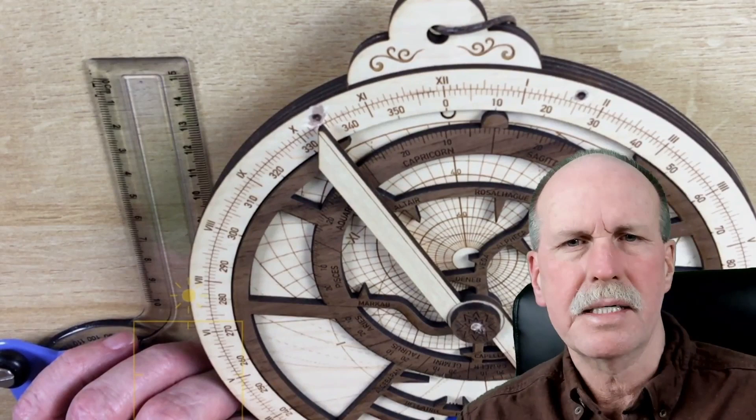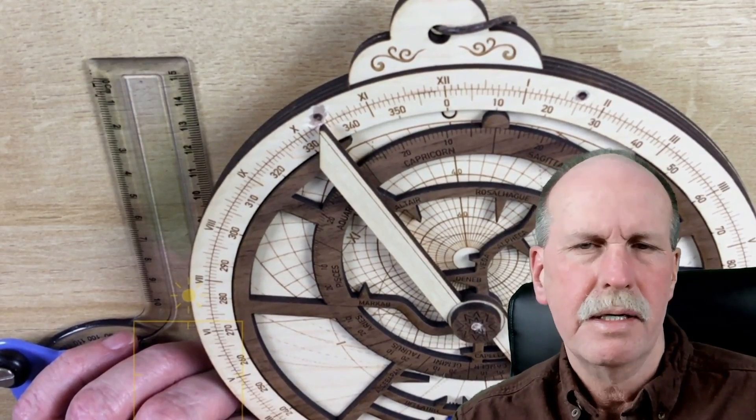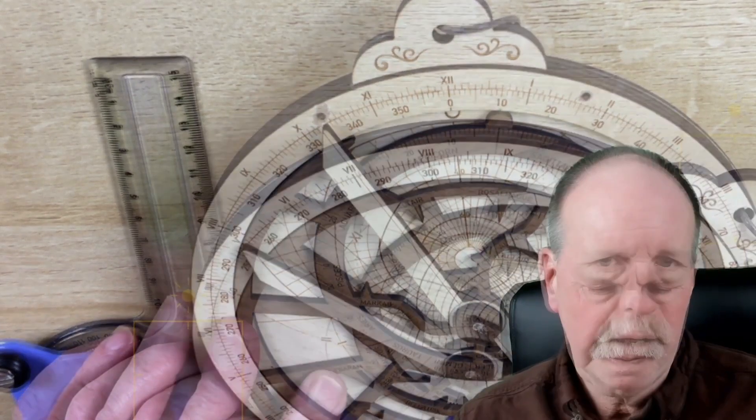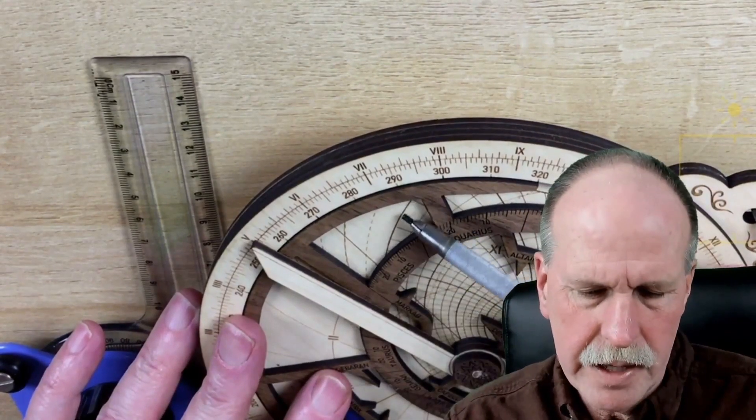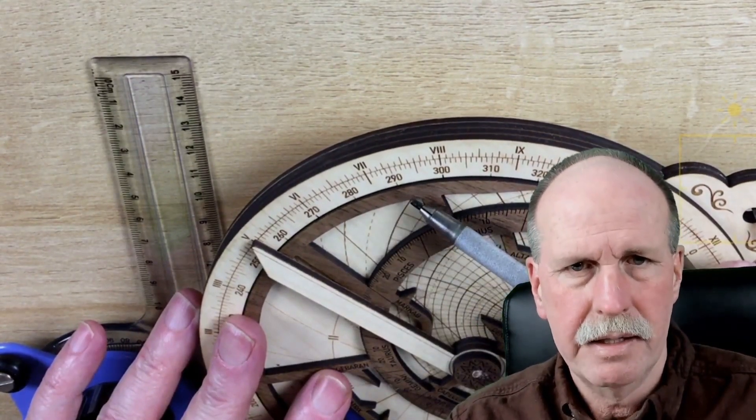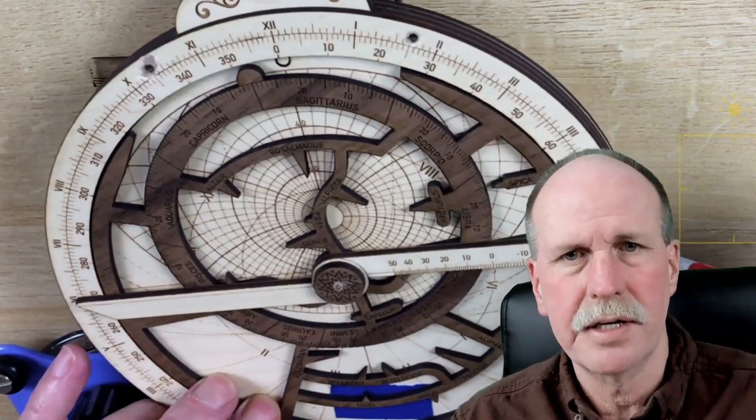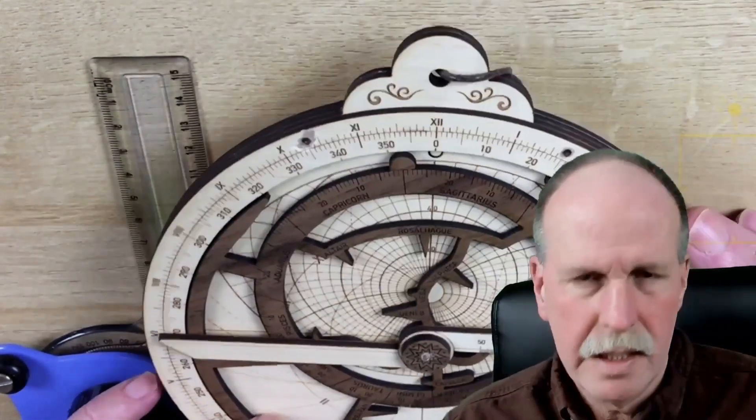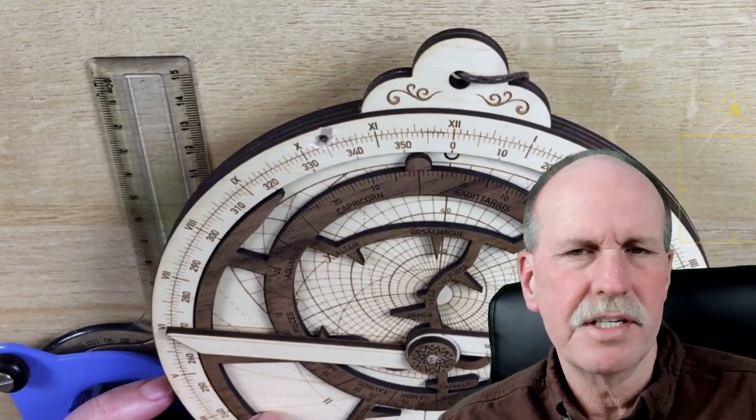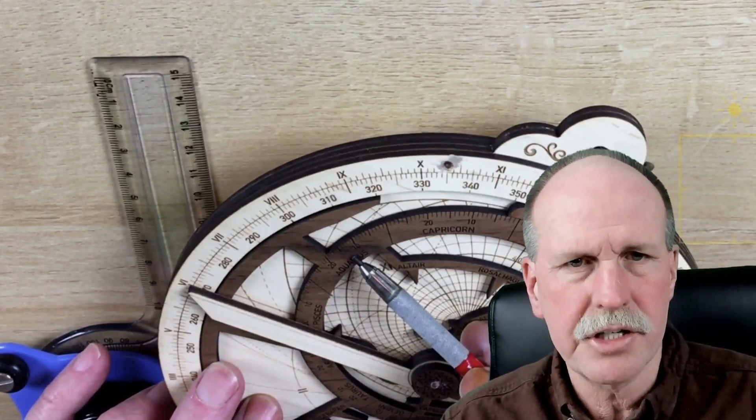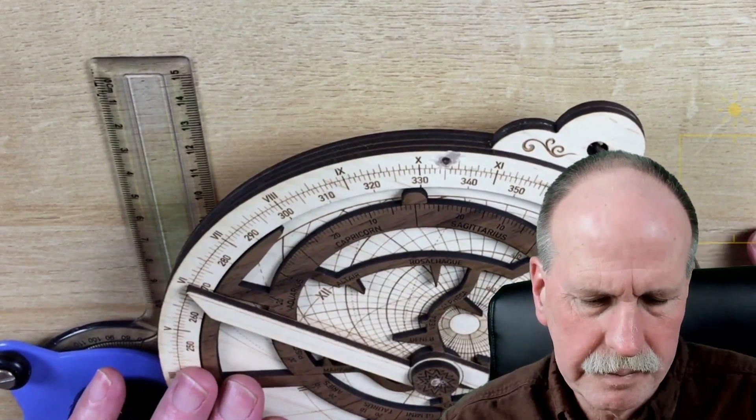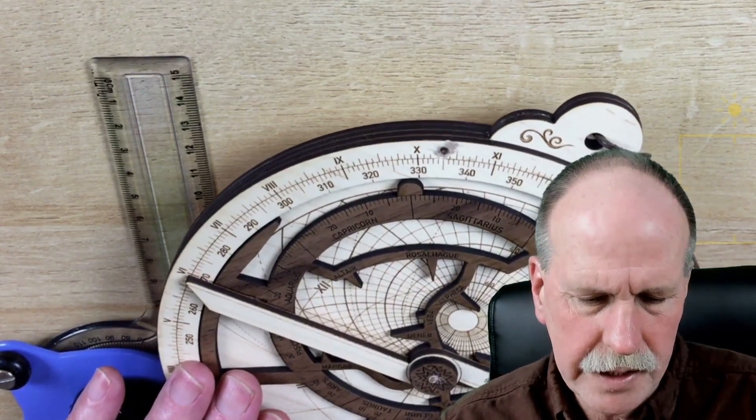Well now that we know how to tell time on the astrolabe let's see if we can find some times. As you recall I said that this line right here is the horizon line and it's in the east. This is south, that's east, this is west over here and north is at the bottom and we said that today was the seventh day of Aquarius. So what we're going to do is we're going to find Aquarius on the rete and we're going to put the seventh day right at dawn and there it is.